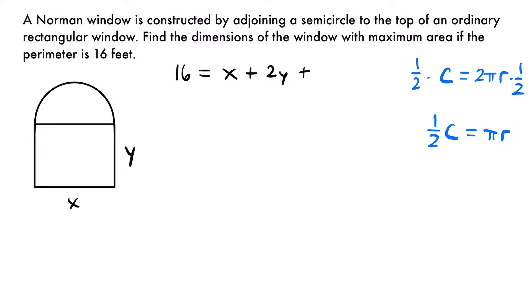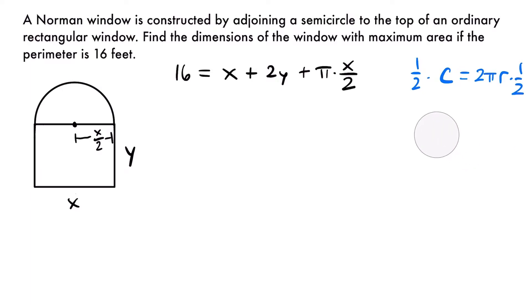We need the radius of the semicircle. Since this is a semicircle, the top edge of the rectangle is dividing the circle in half — that edge equals x, making it the diameter, so the radius is x divided by 2. To complete our perimeter equation, we add π times (x/2), giving us: 16 = x + 2y + π·(x/2). That is our constraint equation.